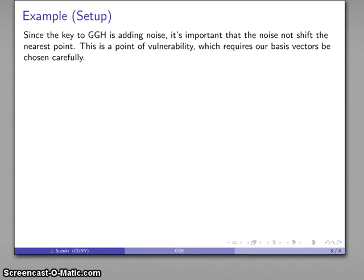Let's set this up. The key to the GGH cryptosystem is the noise vector. The important thing is that we want to make sure that whatever noise we add to the signal, it should not shift where the nearest point is located. This is a point of vulnerability of the cryptosystem, and it's going to require a somewhat careful choice of our basis vectors.